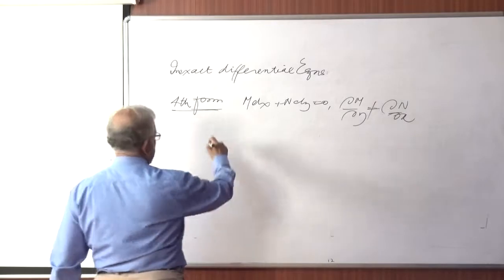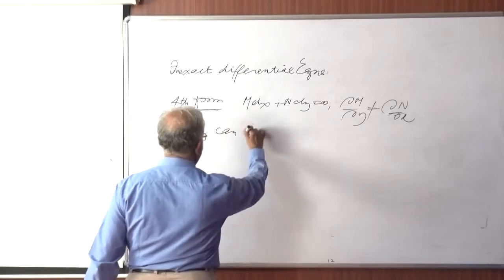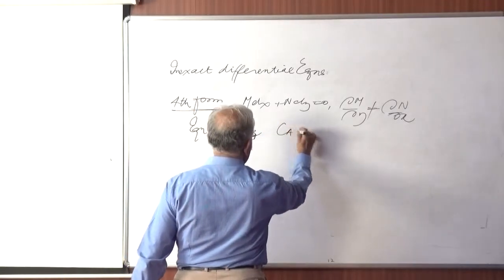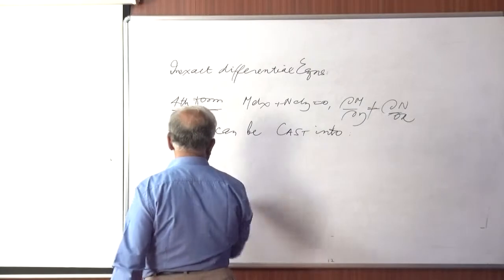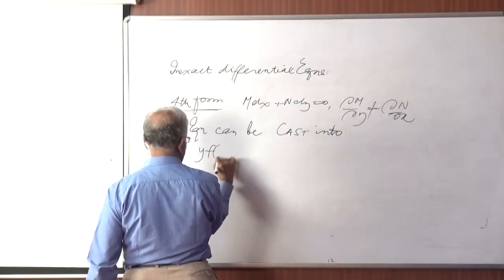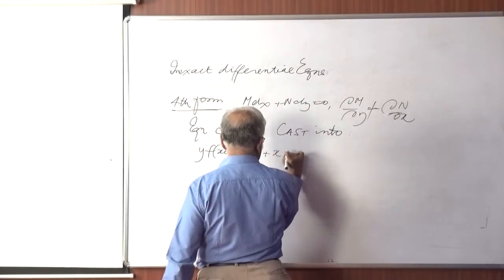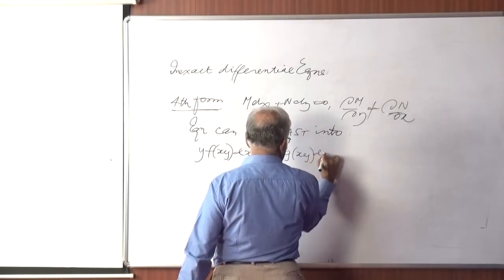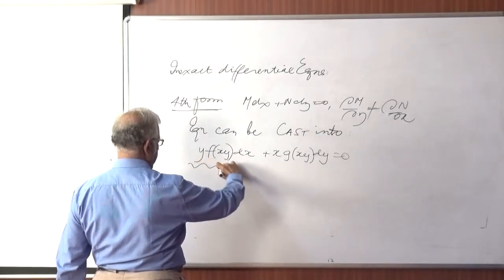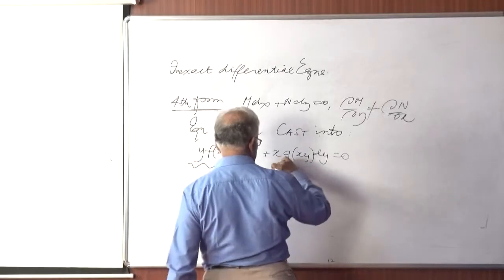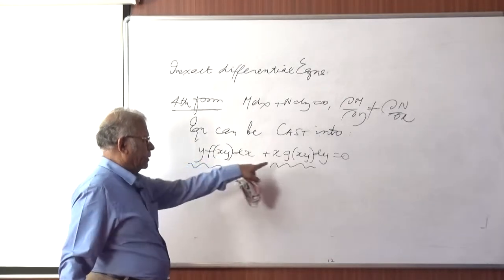Fourth form is when the equation can be cast into the form y·f(xy) dx + x·g(xy) dy = 0. That means our m is y times f(xy) and n is x times g(xy). So these are functions of xy, both of them.